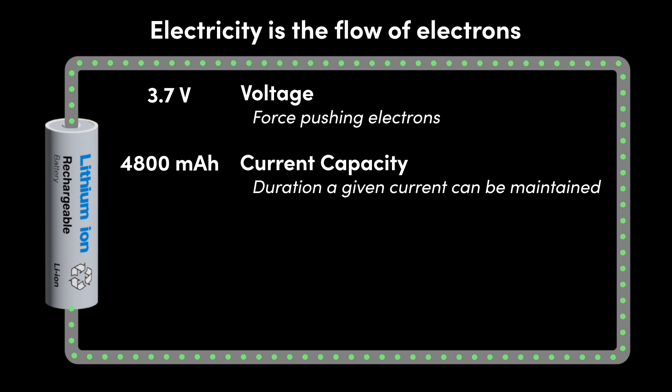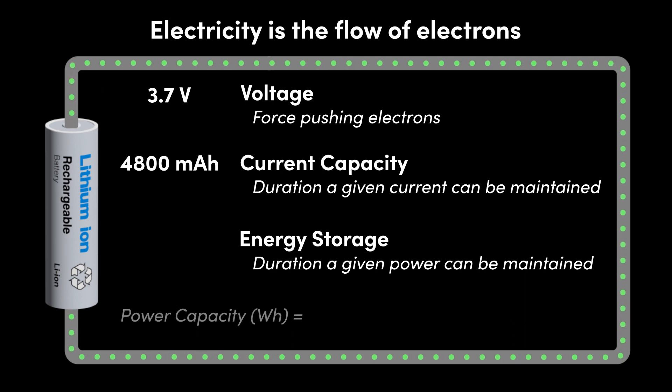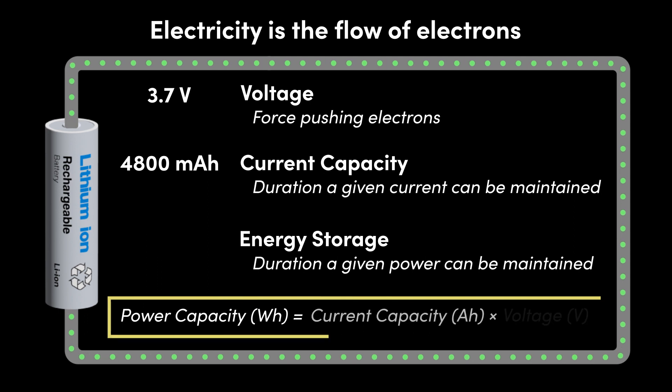Power is the rate at which work is done. Specifically in terms of electrical power, it is the rate at which electrical energy is released, is calculated as the product of current and voltage, and has units of watts. This then leads us to the power capacity of the cell, which is the duration a given magnitude of power can be maintained. This is the conventional means of measuring the overall energy storage capacity of a battery, is expressed in units of kilowatt hours, and is calculated as the product of current capacity and voltage.